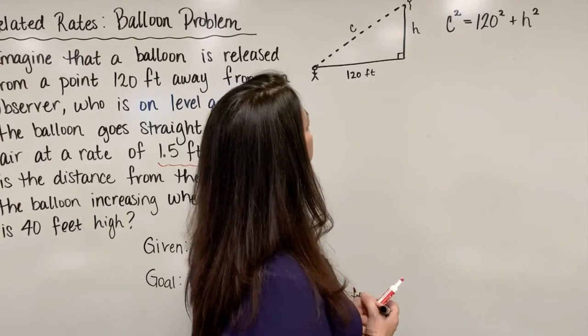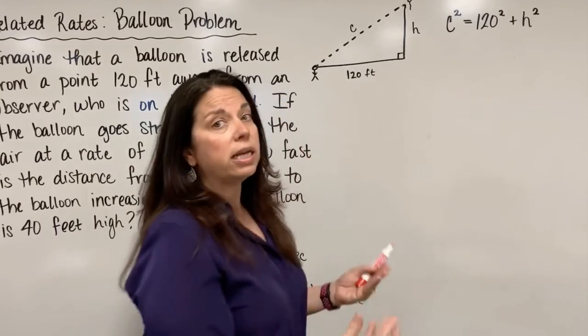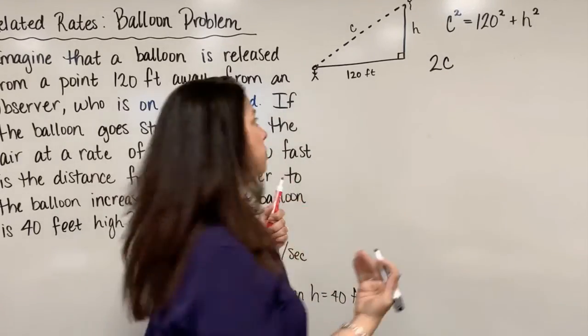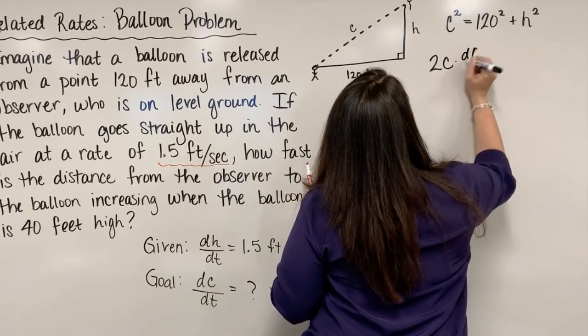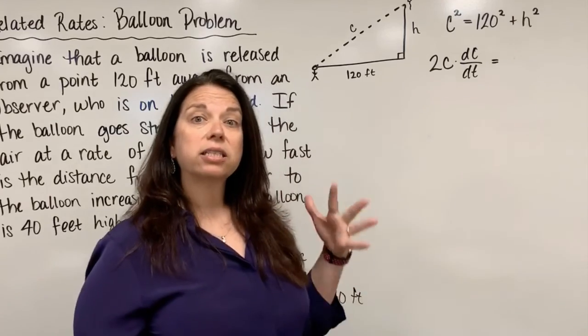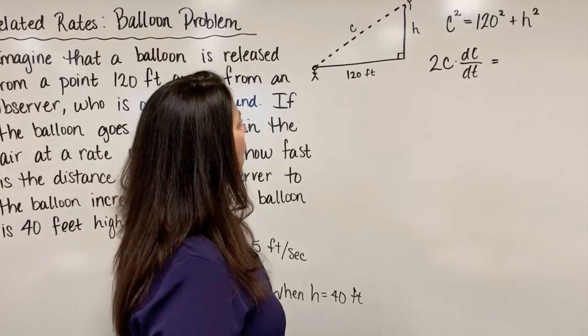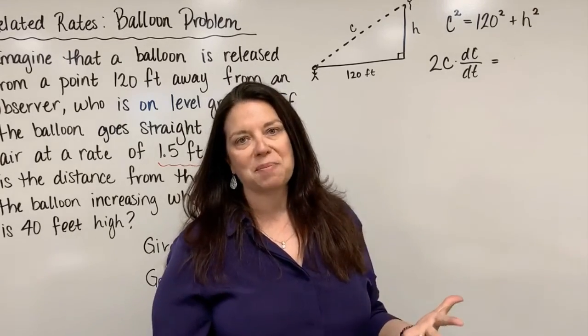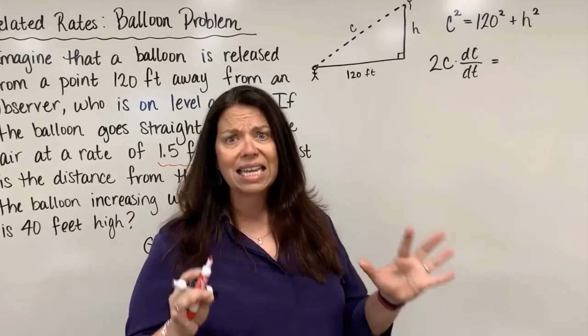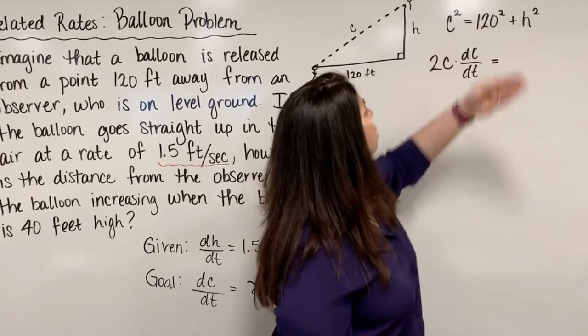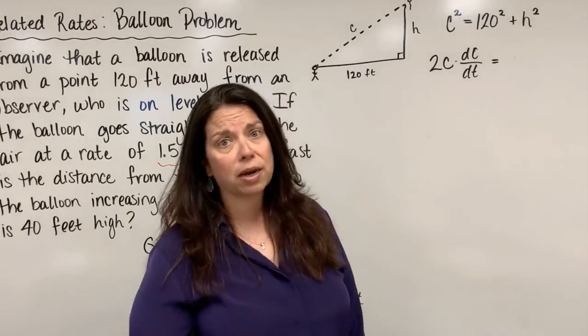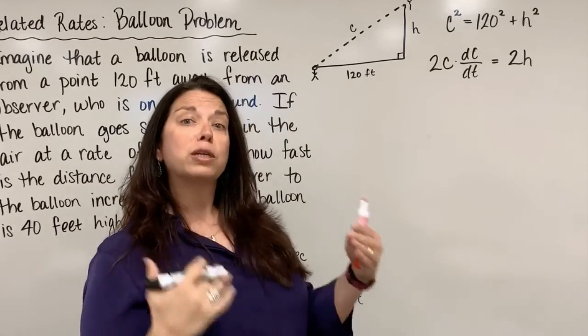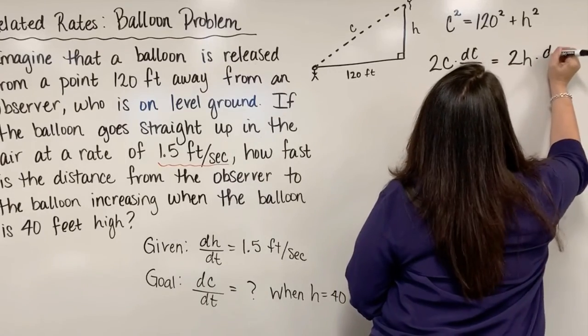I'm going to find the derivative of this equation. On the left side, c squared, its derivative is 2c, but I took the derivative of c with respect to time, so I need my special notation dC/dt. I need that there to tell the world that I was taking the derivative of c with respect to time. On the right hand side, I have 120 squared, and when I take its derivative, because it's a constant, I get zero. So I continue on with h squared, its derivative is 2h, but I was taking the derivative of h with respect to time t, so this will be multiplied by dH/dt.